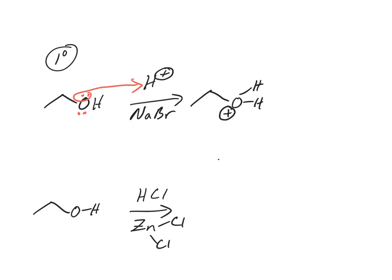Now, it's a good leaving group, but can I do an SN1 reaction? This is important. No, because we cannot make primary carbocations. There's not enough stabilization. Carbocations are high energy, and they need to be stabilized. Secondary is kind of the worst we could do. Primary won't happen.